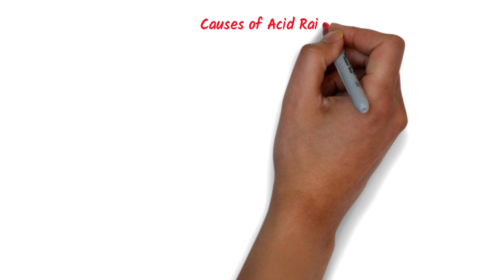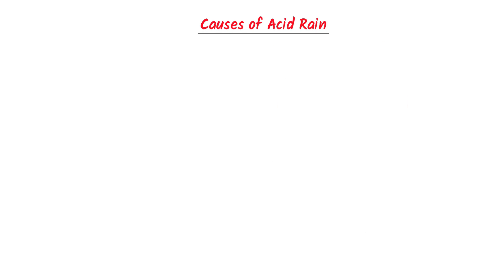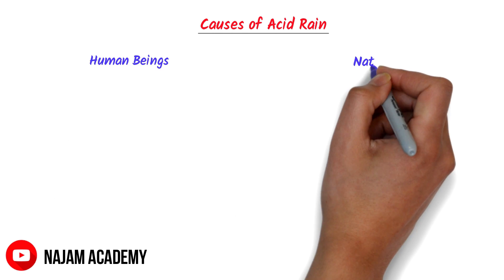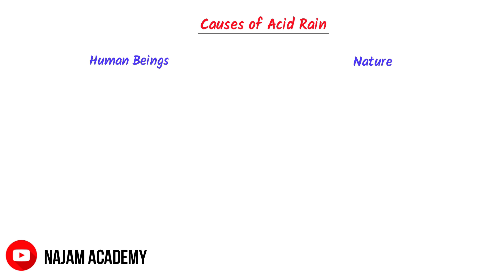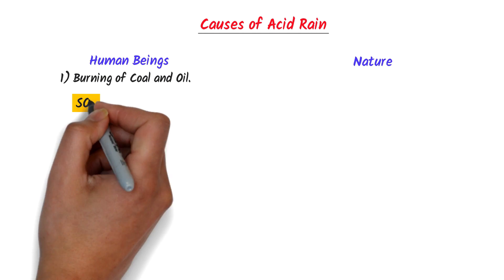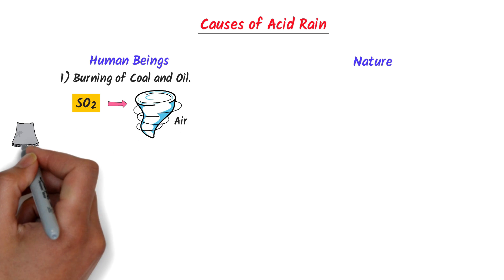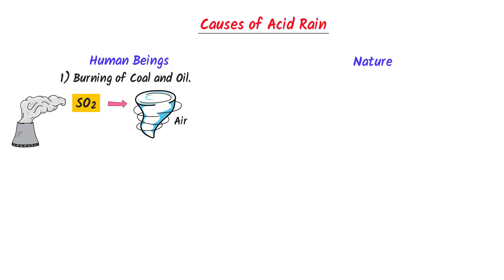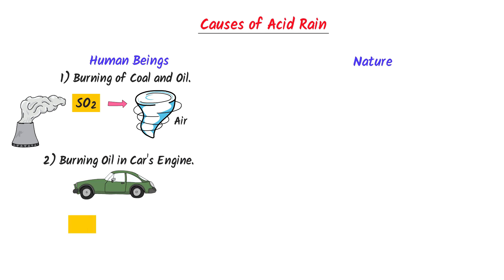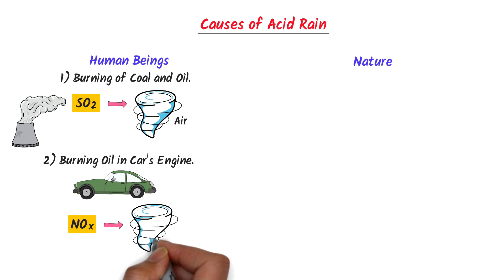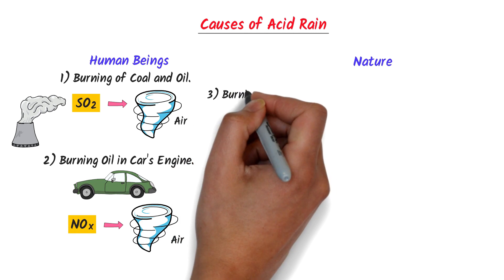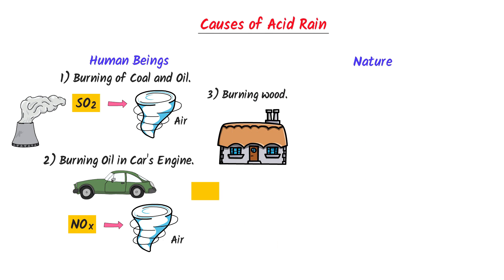What are the main causes of acid rain? There are two main causes: human beings and natural processes. Firstly, the burning of coal and oil releases sulfur dioxide into the air, such as in power plants. Secondly, burning fuel in car engines releases oxides of nitrogen into the air. Thirdly, burning wood in homes also releases sulfur dioxide. Remember that human beings are the major cause of acid rain.